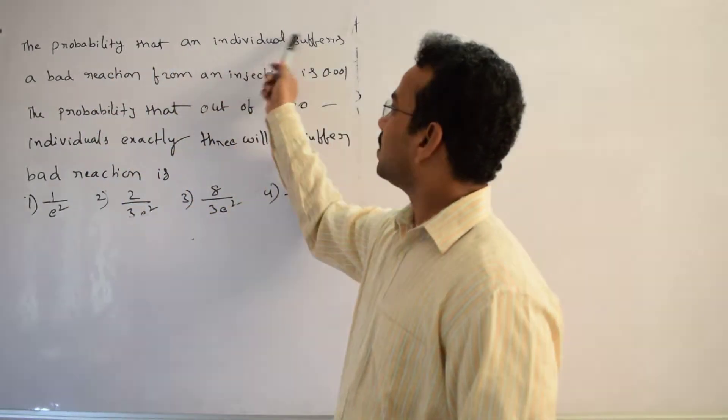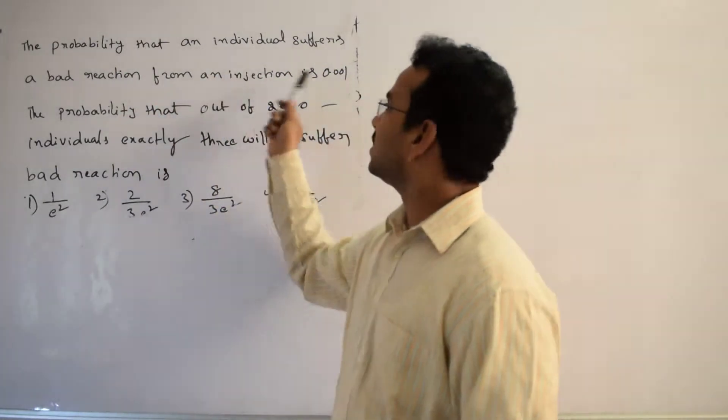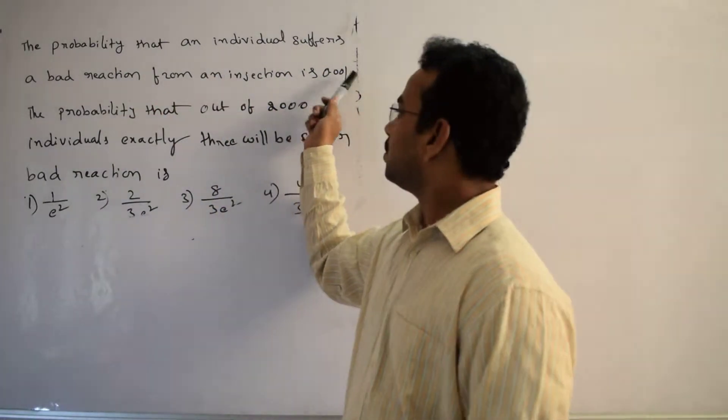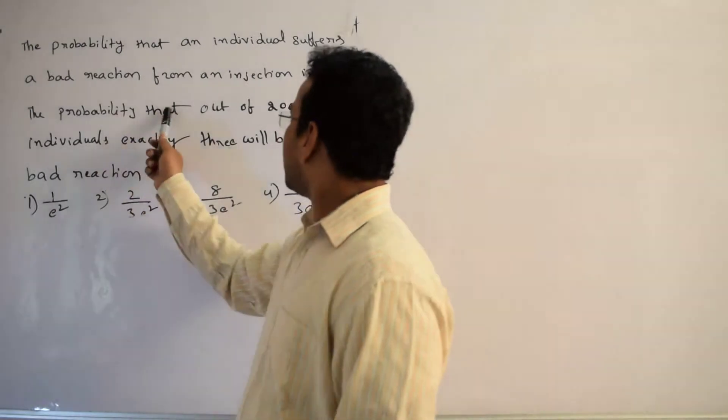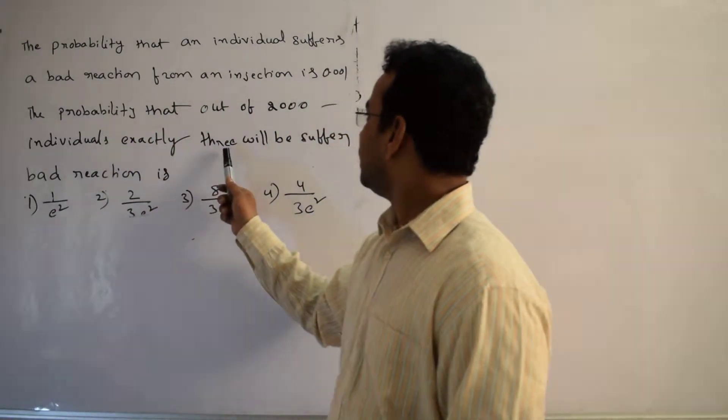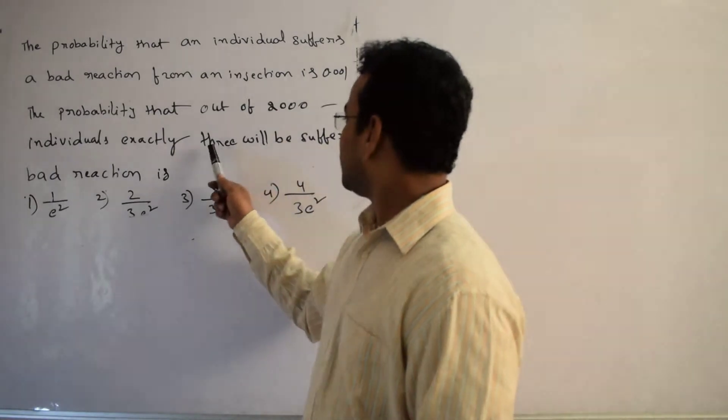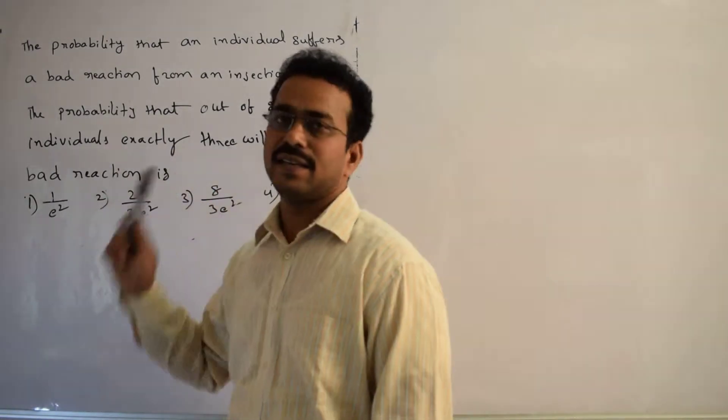The probability that an individual suffers a bad reaction from an injection is 0.001. The probability that out of 2,000 individuals, exactly 3 will suffer a bad reaction is...